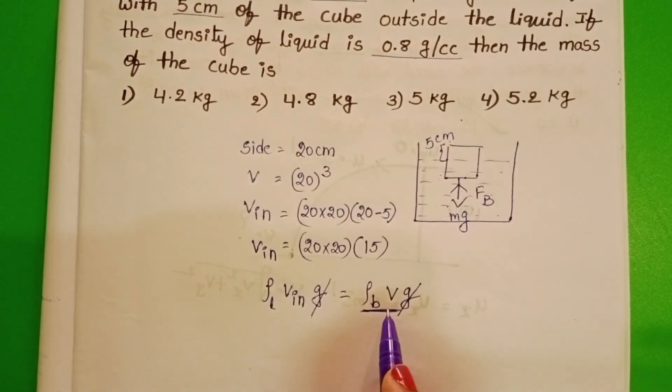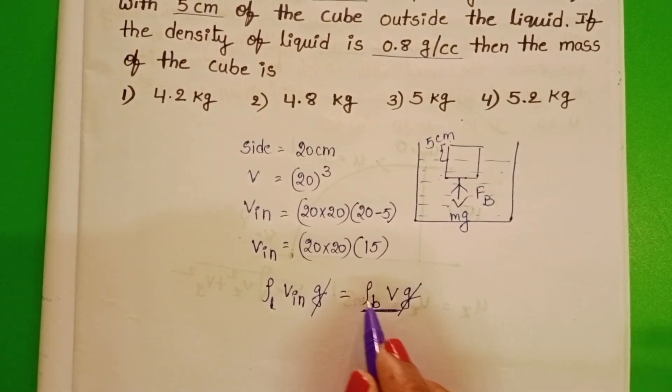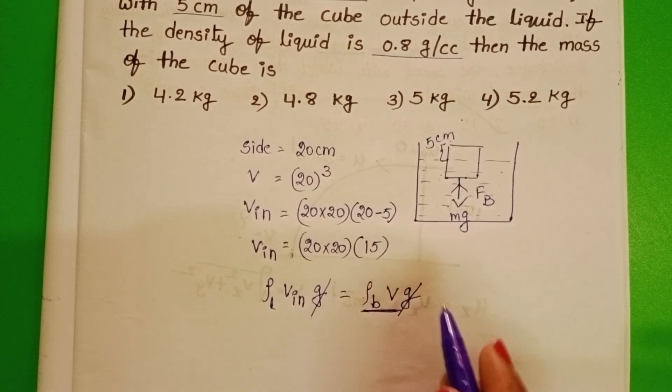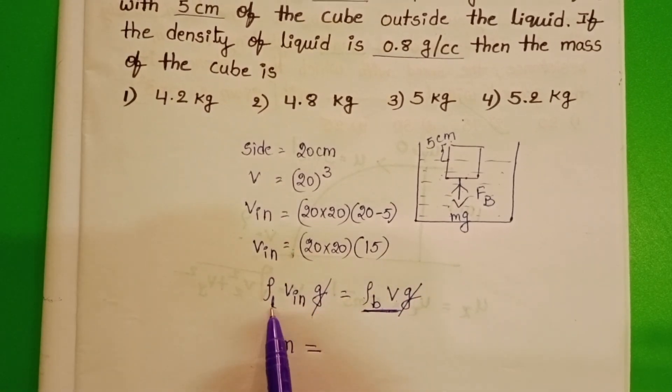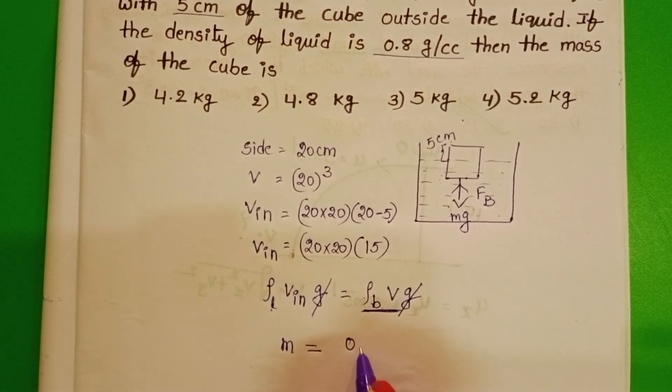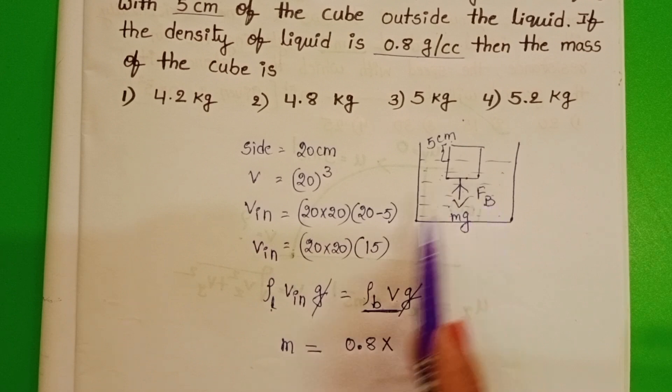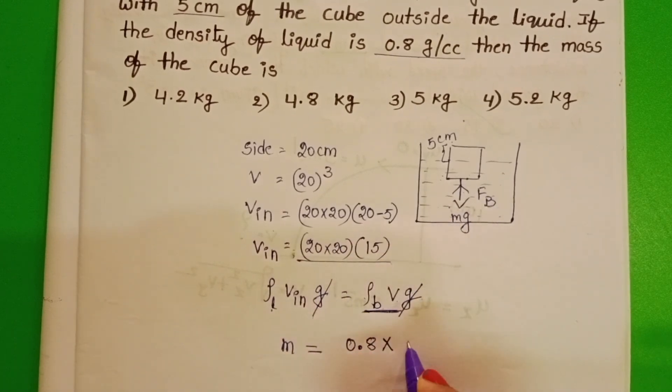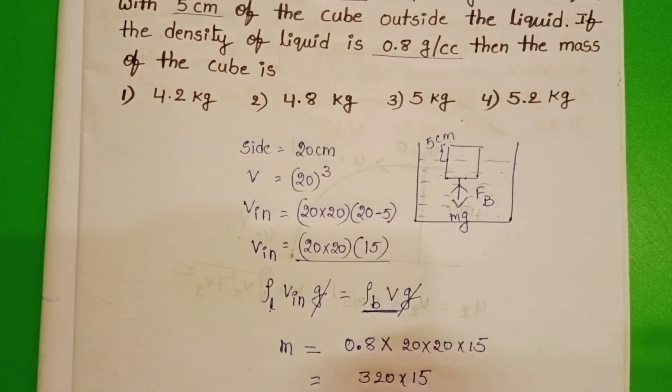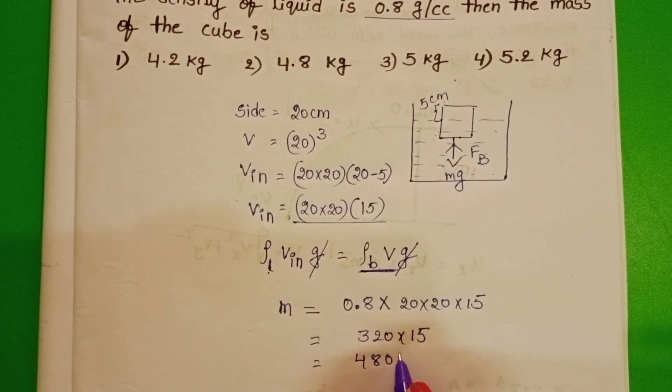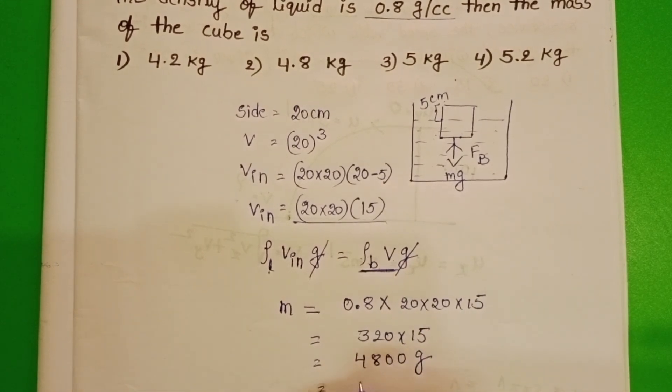We have to calculate the mass. In place of density into volume, take mass. Mass equals the given density of the liquid, 0.8 g per cc, and volume of the cube inside the liquid is 20 into 20 into 15. 320 into 15 equals 4,800 grams. Convert into kg: 4.8 kg.